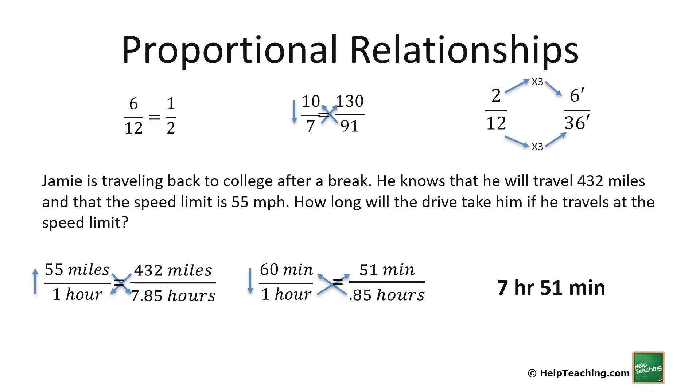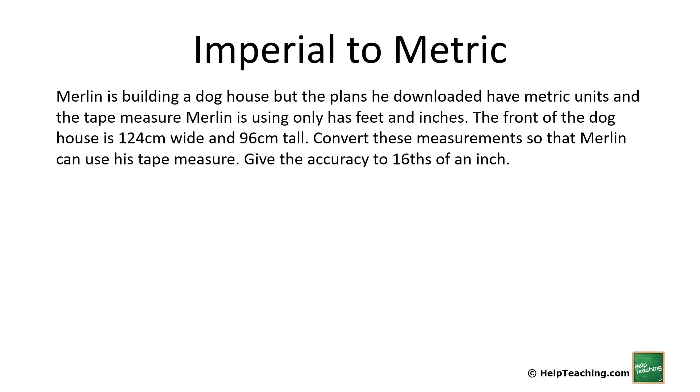Let's look at a case of converting imperial to metric. Merlin is building a doghouse, but the plans he downloaded have metric units and the tape measure Merlin is using only has feet and inches. The front of the doghouse is 124 centimeters wide and 96 centimeters tall. Convert these measurements so Merlin can use his tape measure. Give the accuracy to sixteenths of an inch. Let's use the conversion of 2.5 centimeters to 1 inch. We're going to put our centimeters on the top, so we'll start with the 124 because it's above the variable we don't know. 124 times 1 divided by 2.5 gives us 49.6 inches.